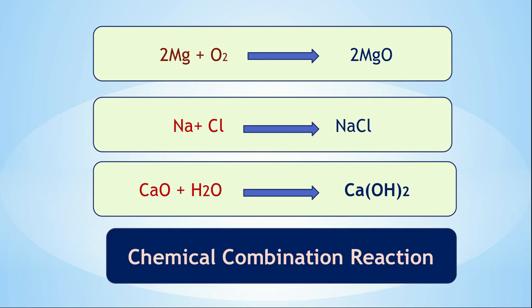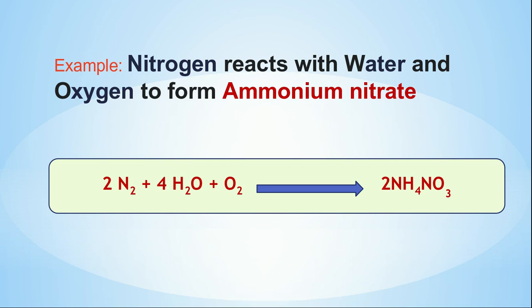Yes — chemical combination reaction! These are the best examples of chemical combination reaction. Now, here is another example to make the concept clearer: nitrogen reacts with water and oxygen to form ammonium nitrate. Here, there are more than two reactants — three reactants combine to produce one single product. This is also an example of chemical combination reaction.